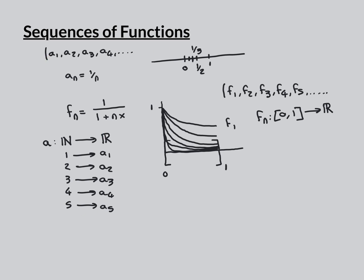To extend this formalism to sequences of functions, if we call the sequence S, then formally S is a mapping from the natural numbers (beginning at 1) not into the real numbers, but into a set of functions — which we call a function space, denoted with a big curly F. These curly letters are often used in more advanced analysis to represent function spaces.